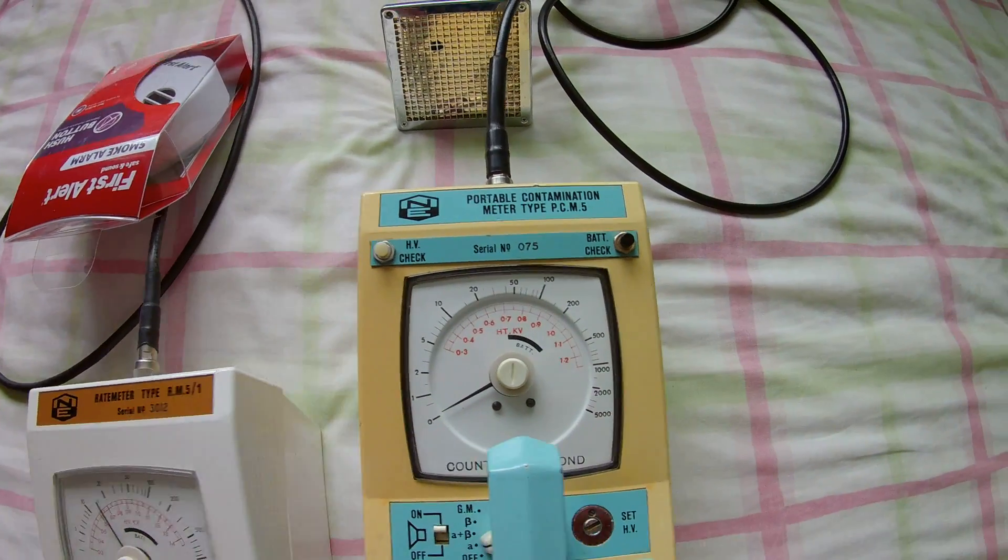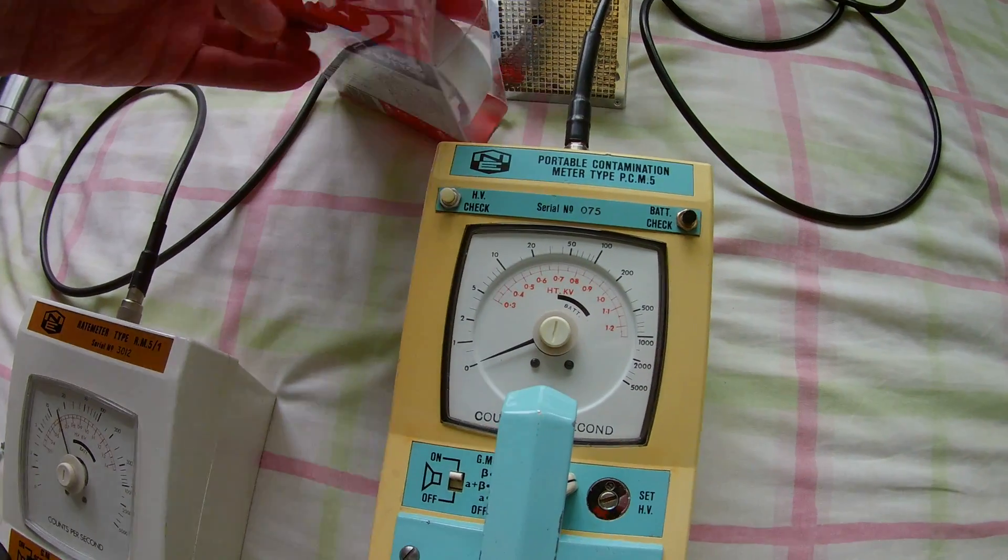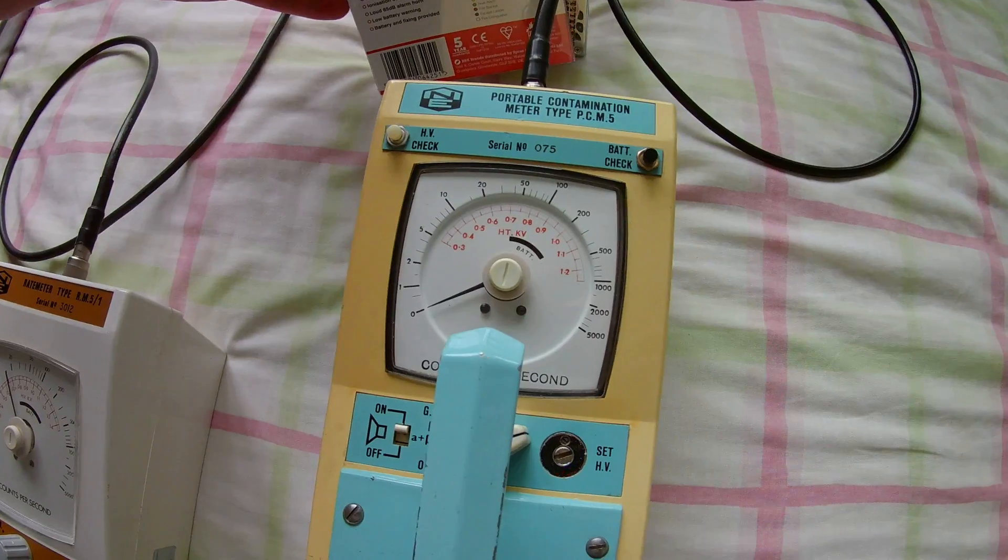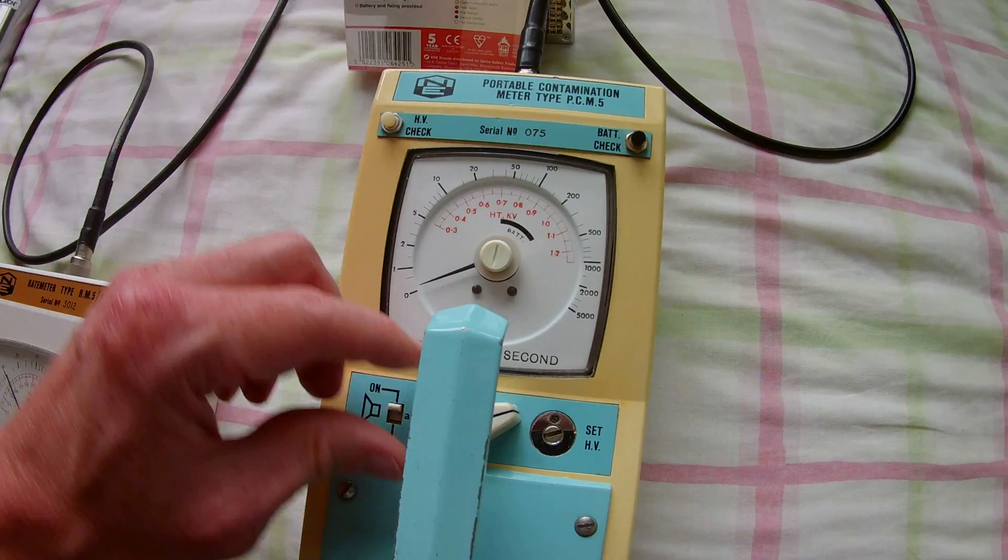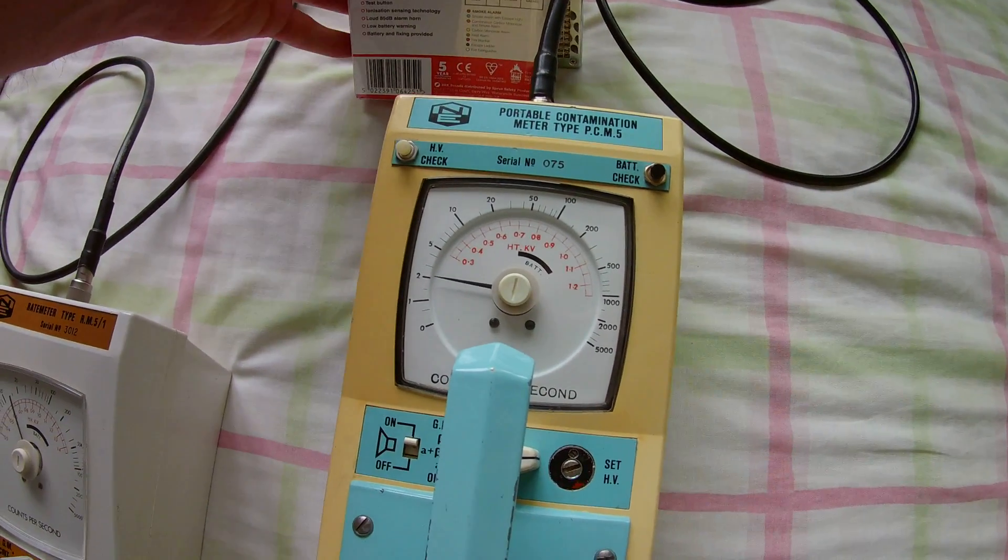Turn that off. We move onto the contamination meter. Nothing at all on the alpha channel. If we turn it to alpha plus beta, we get a very small reading.